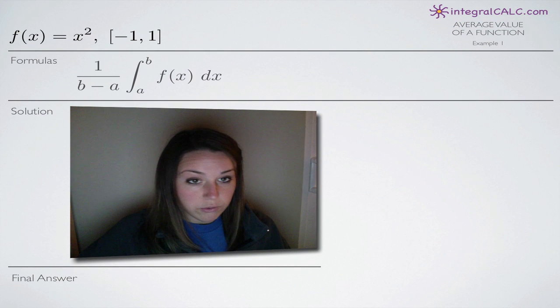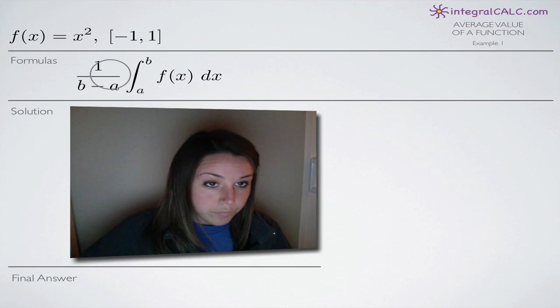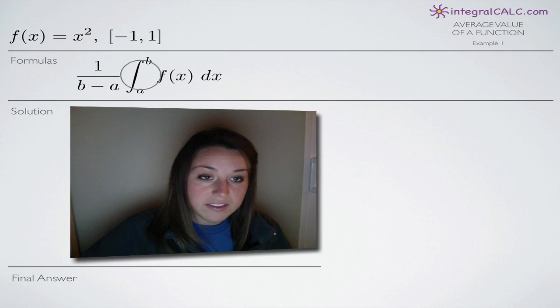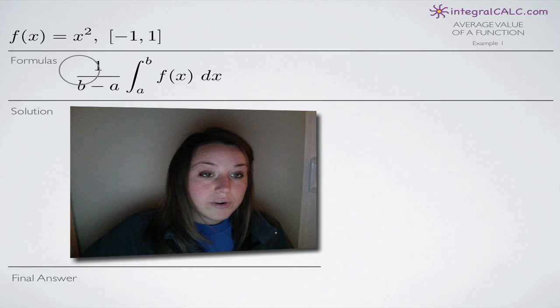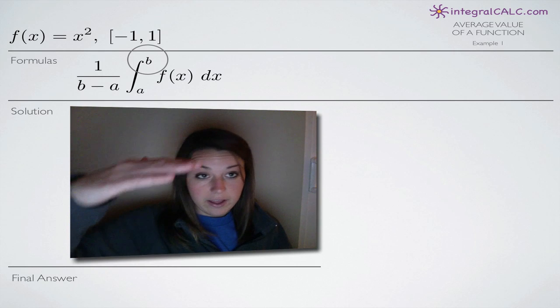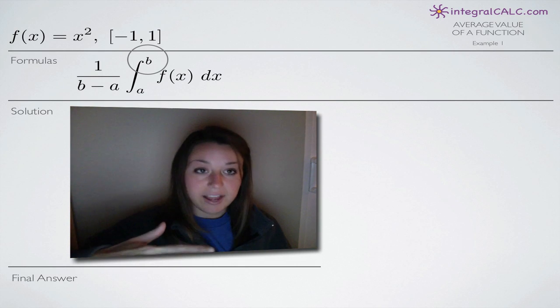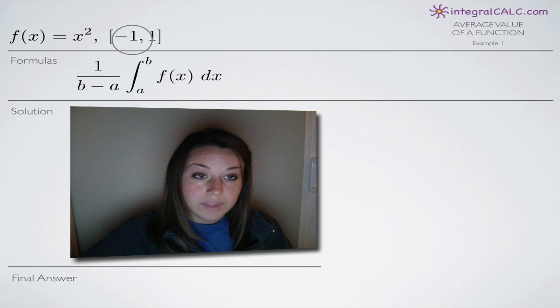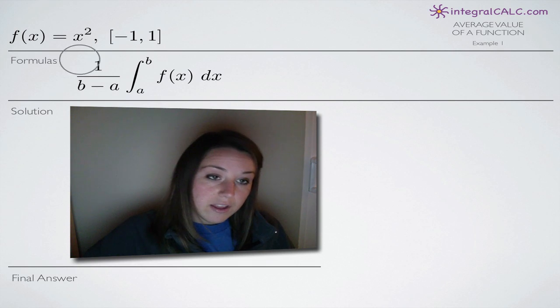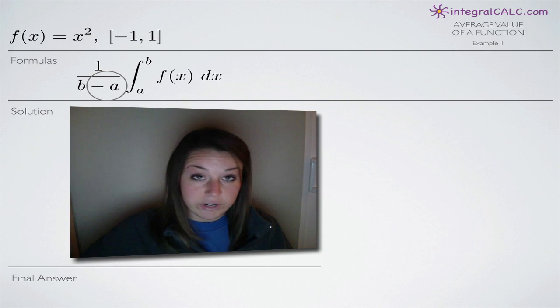The formula that we're going to use is this formula here and basically what it does is, ignoring the first part here, we're just going to take the integral on the range a to b so it will get the area between the graph and the x axis between negative 1 and 1, and then this part out front here is what helps us with our average value.